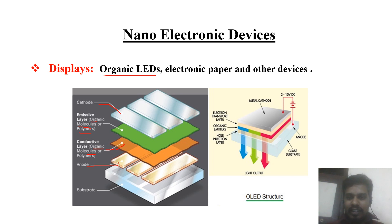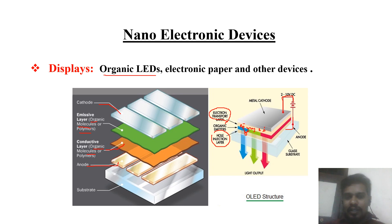If we bias the organic light-emitting diode — giving negative potential to the metal cathode and positive potential to the anode — the metal cathode will emit electrons into the electron transporting layer, which is usually the emissive layer. At the same time, the bottom anode will emit positive charges (holes) into the hole injection layer. In the organic emitter, these electrons and holes recombine with each other and emit a photon at a particular wavelength and frequency in the visible range. That is why we can see different colors on the OLED screen.